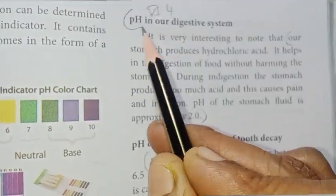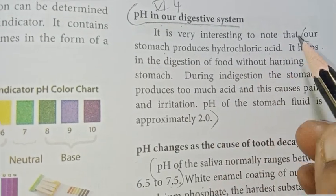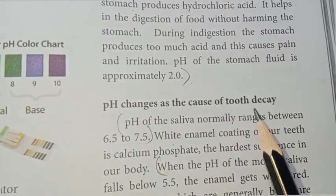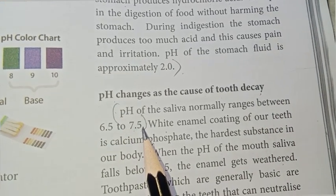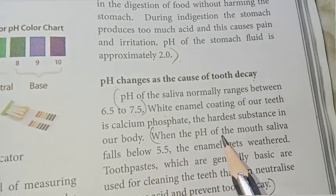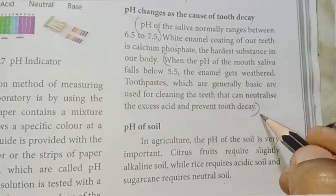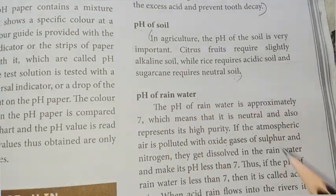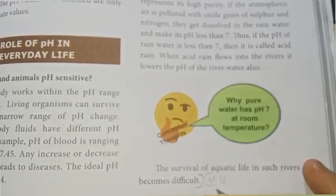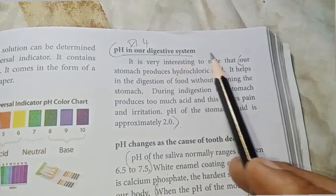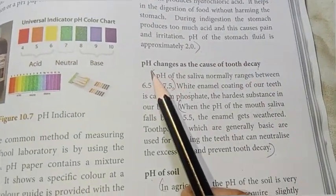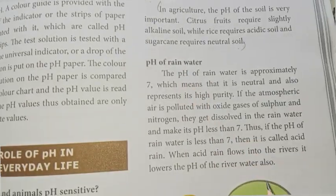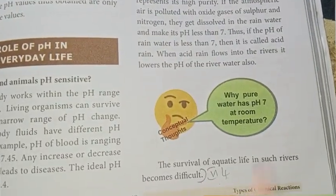pH in our digestive system: our stomach produces hydrochloric acid. pH changes as the cause of tooth decay — pH of the mouth saliva. When the pH of the mouth saliva drops, tooth decay occurs. pH of the soil and pH of rainwater are also important everyday applications of pH.